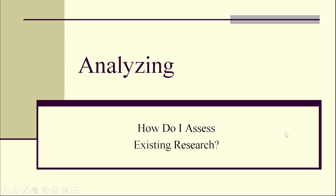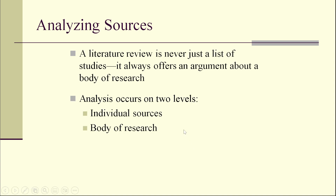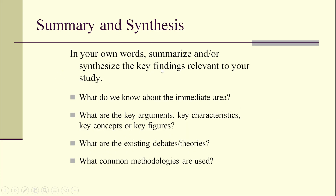Analyzing involves assessing existing research. A literature review is never just a list of studies — it always offers an argument about a body of research. Analysis occurs at two levels: individual sources and body of research. There are four analysis tasks of a literature review: summarize, synthesize, critique, and compare. When summarizing and synthesizing in your own words, identify the key findings relevant to your study.